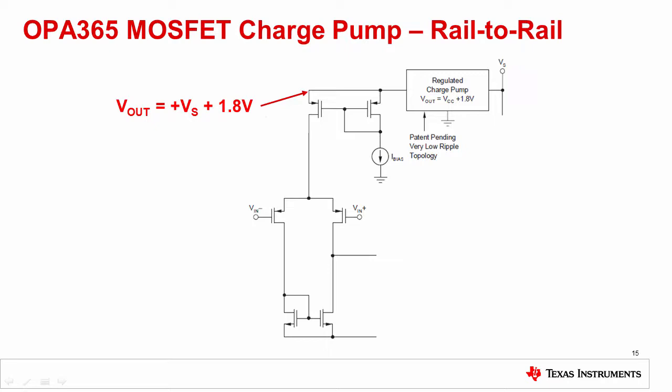Also note that the charge pump signal can feed through the external power supply. In this case, it can combine with other power supply noise sources and create harmonics of the charge pump signal. For this reason, it is best to use proper decoupling on the op amp power supply pins. In some cases, using a ferrite between the amplifier and other sensitive circuits may also help.